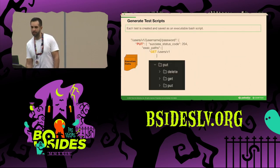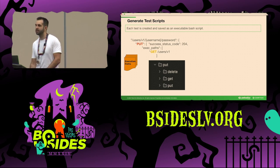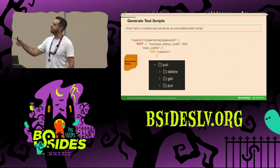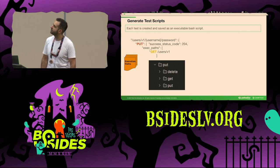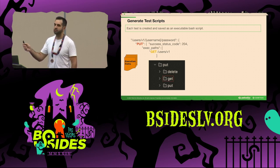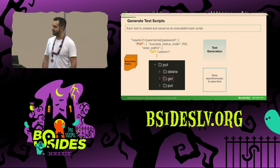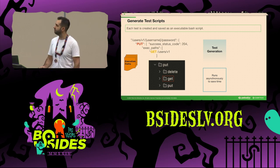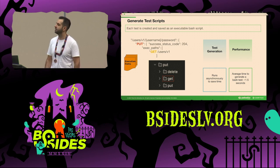When we generate a test script, it is saved as an executable bash script. Here is an example of a simple BOLA test: the consumer is 'put user password' and the producer is 'get users,' which provides the username. The test is saved in a put/get directory. The test generation runs asynchronously to save time, with an average of 1.5 seconds to generate each execution bash script.